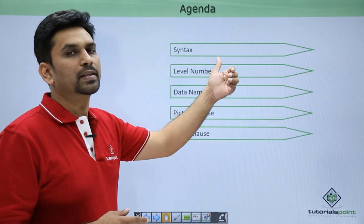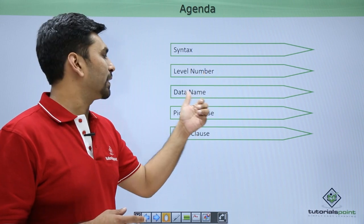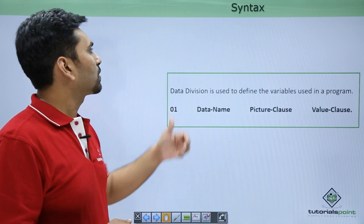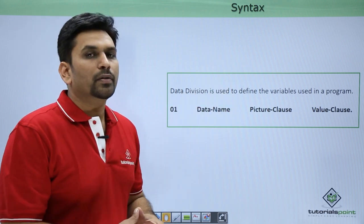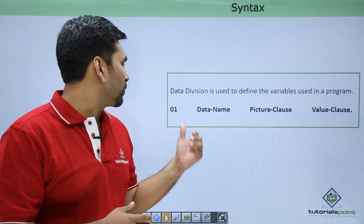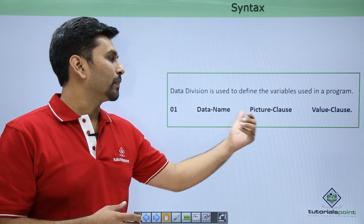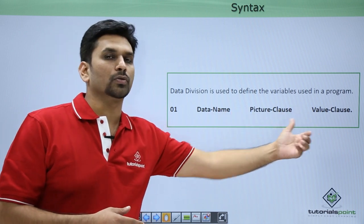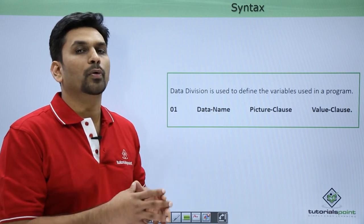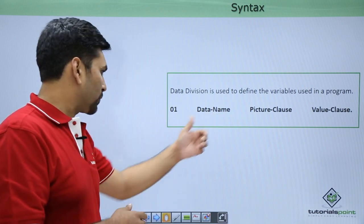This is the agenda: we will first see the syntax in COBOL data types, then we will learn about the level number, the data name, picture clause, and the value clause. First we will start with the syntax. When in the Working Storage Section we are defining variables, you need to define them in this syntax: level number, data name, picture clause, and value clause. Here you need to give the name of the variable which you are about to use in the COBOL program in the Procedure Division.